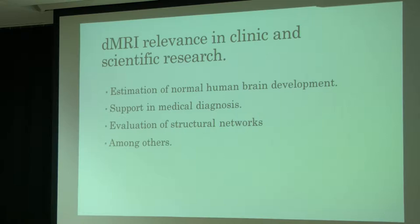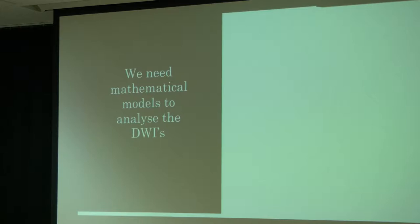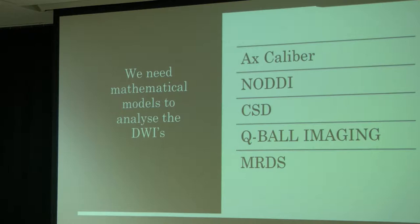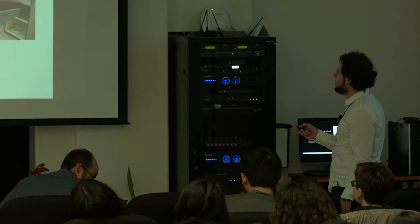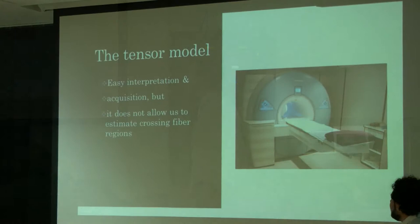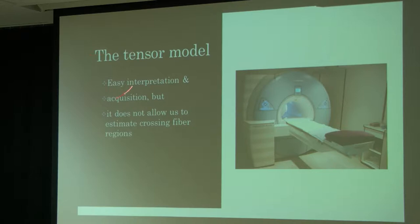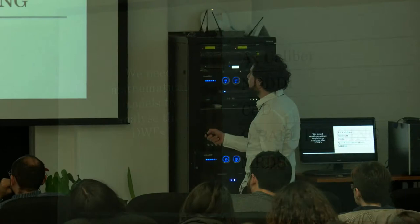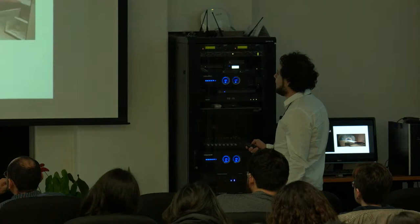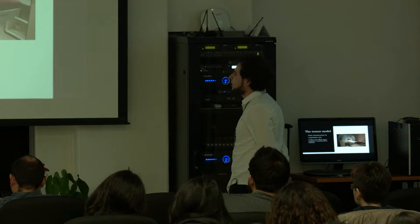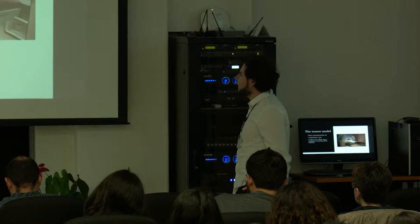We have diffusion-weighted images, but we want information. For that, we need to use mathematical models to analyze these images. Some of them are AxCaliber, NODDI, CSD, QBALL imaging, MRDS — developed here in this lab — and the Tensor model. The Tensor model has been widely used because it is easy to interpret and acquisition times are reasonable, making it available in the clinic. The problem with this model is that it does not allow us to estimate crossing fiber regions, and in a diffusion-weighted image, 90% of voxels present crossing fiber regions.